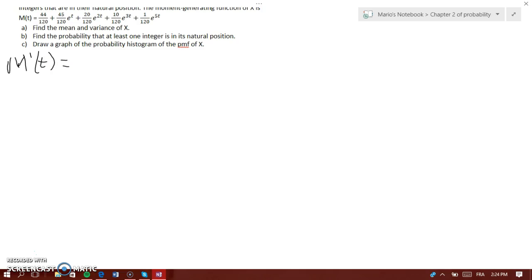The first derivative: 44 over 120 will be 0 because when you have a constant it goes to 0. Then you would have 45 over 120 times e to the power of t, plus 40 over 120 times e to the power of 2t, plus 30 over 120 e to the power of 3t, plus 5 over 120 e to the power of 5t.